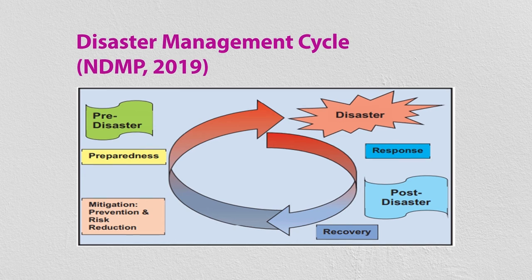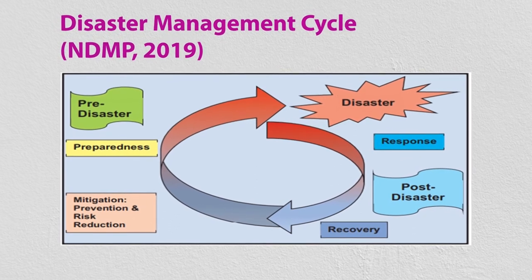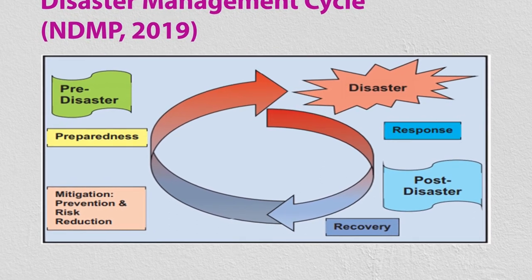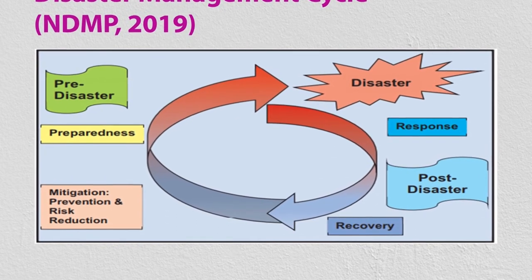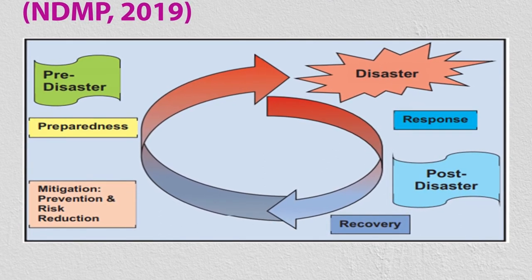Pre-disaster means preparedness. For example, in Odisha we have seen cyclones frequently, so shelter homes in cyclone-prone areas have already been built — that is pre-disaster preparedness. The cyclone warning system has been improved so much that it can now give you the exact timing, exact location where the cyclone will touch the ground, what the wind speed will be, and what the possible impacts will be. All these are pre-disaster preparations.